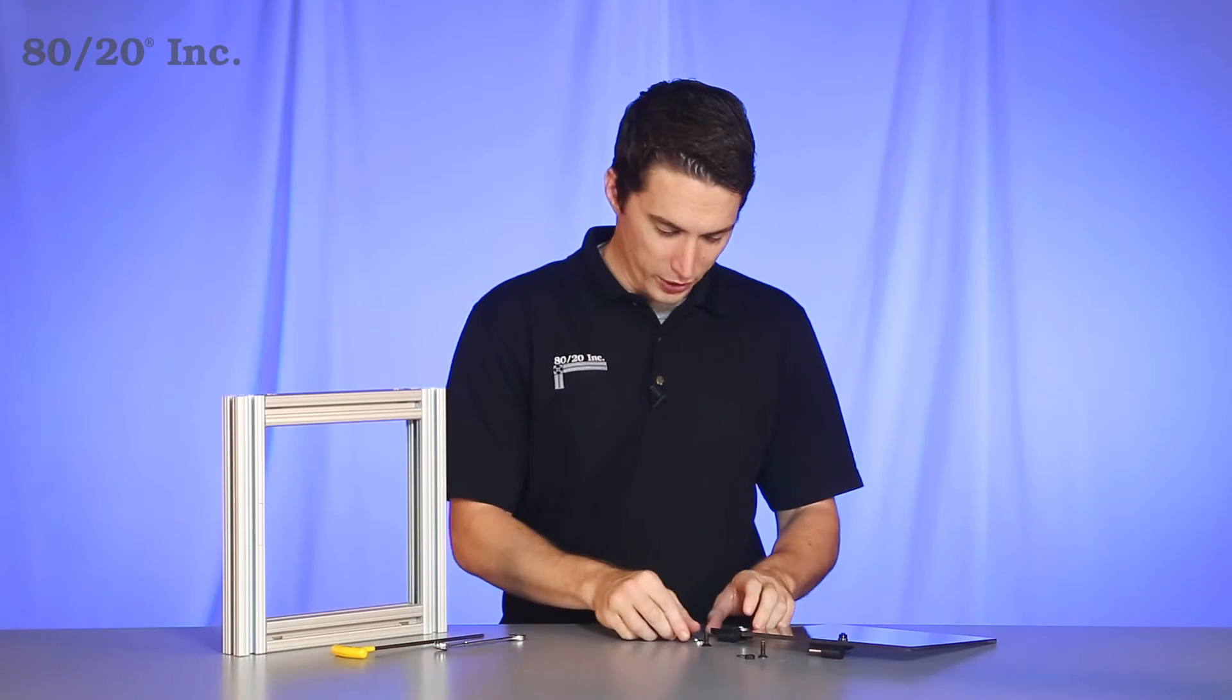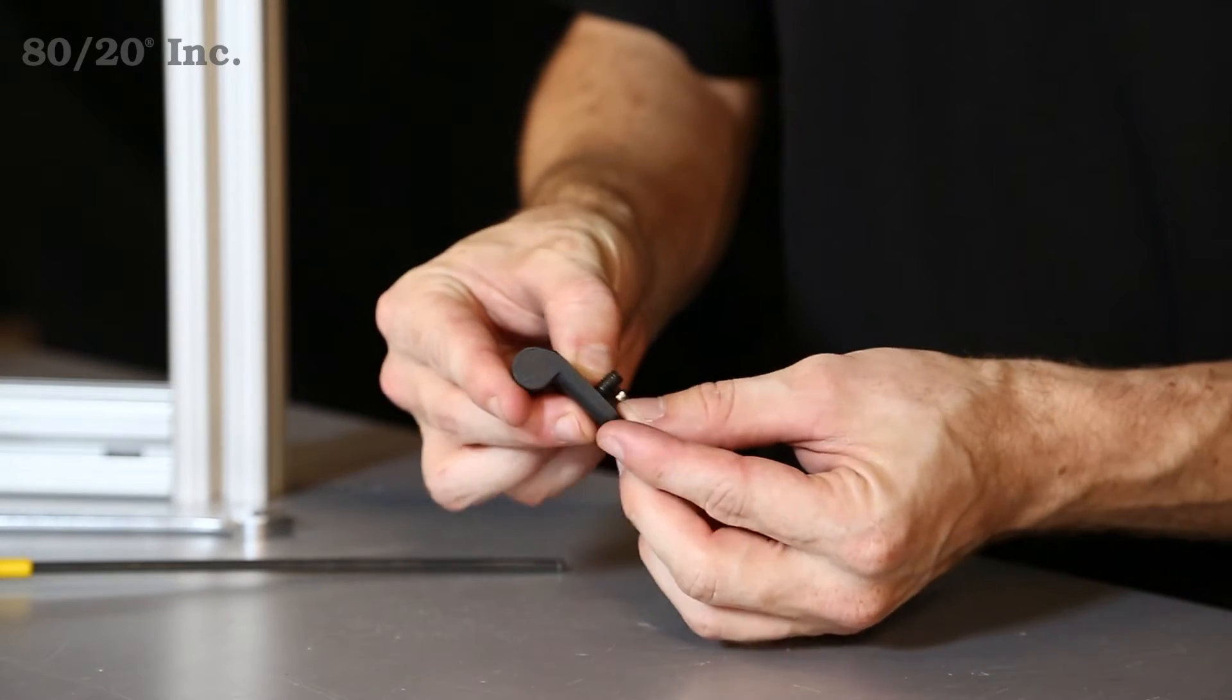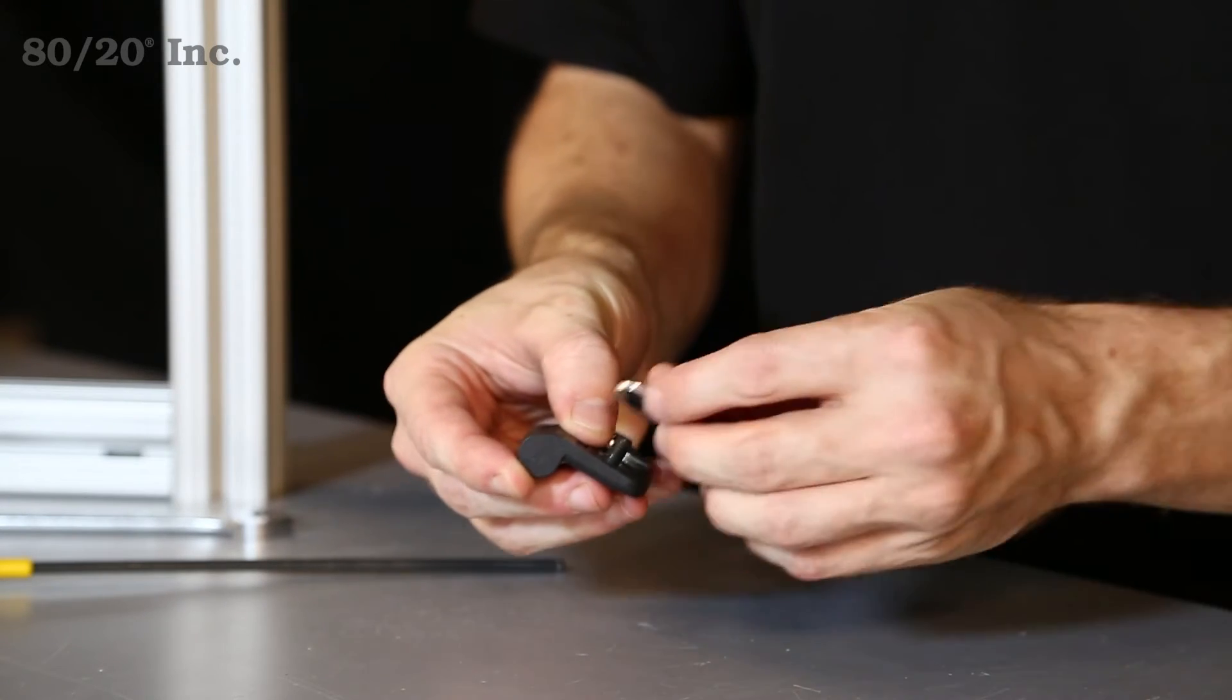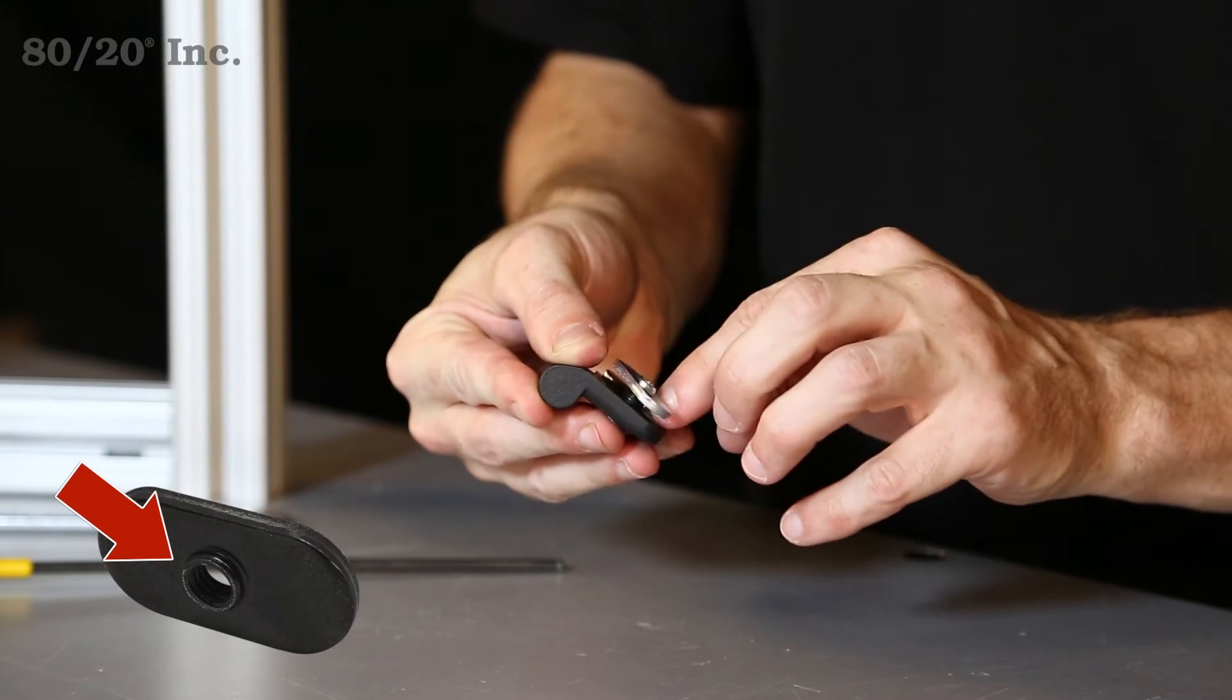To get started, we're going to preload our hinge. We're going to do the T-slot side first, put a bolt and a T-nut on it. We want to make sure that pilot projection is facing downwards, away from the hinge.